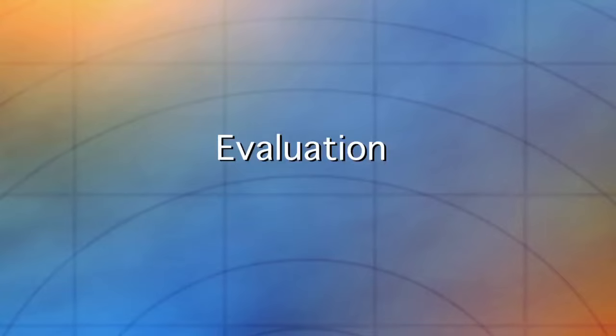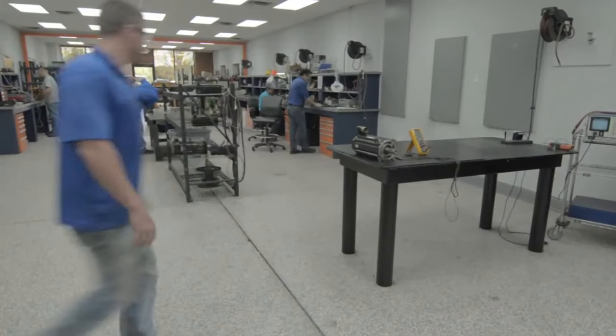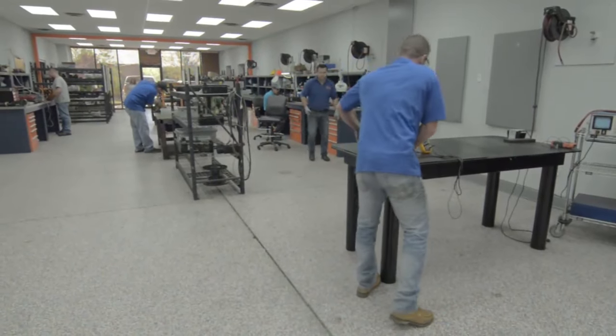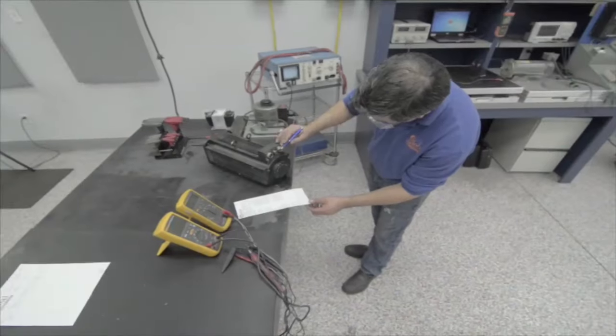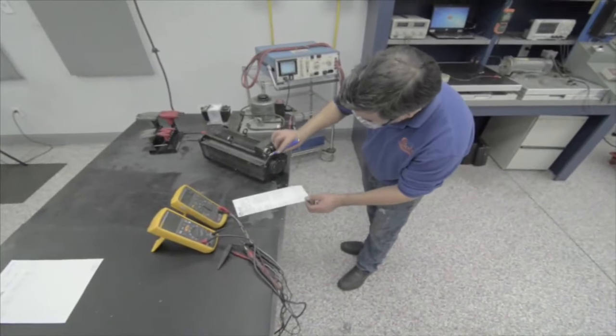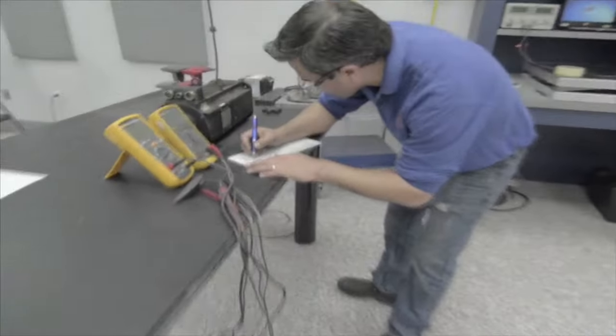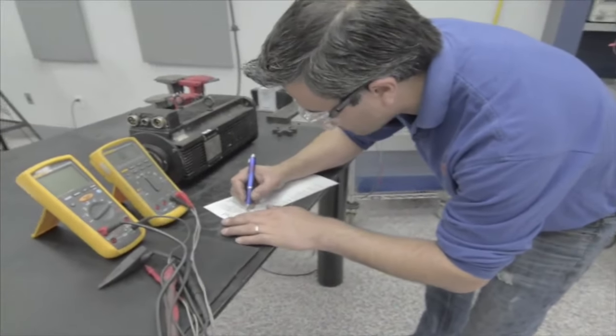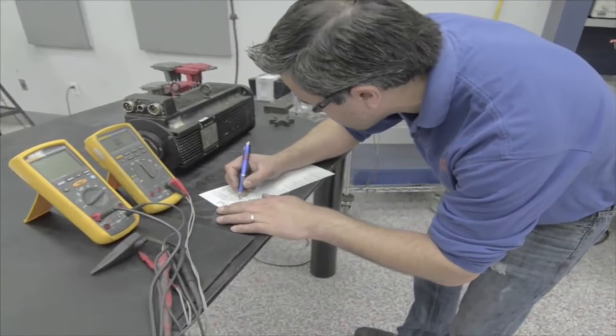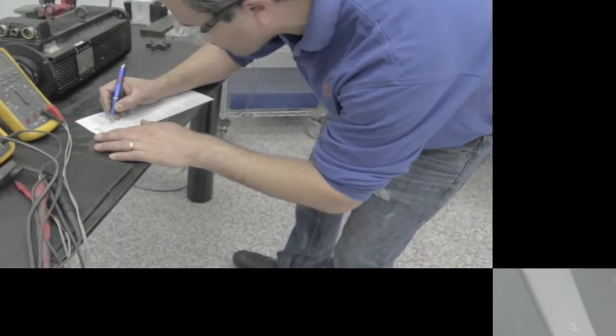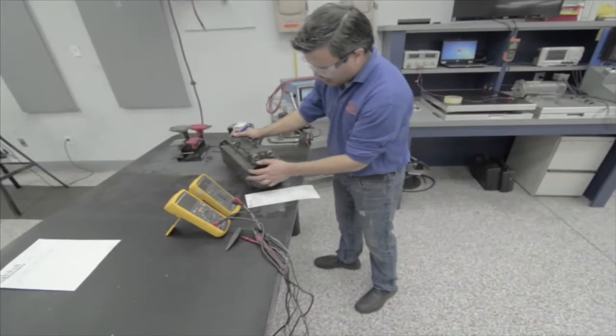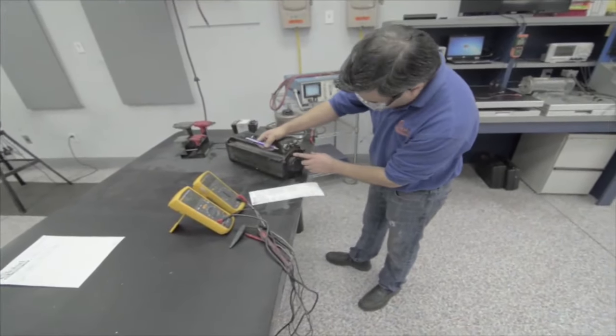Once your servo motor arrives and has been received into our database, an evaluation by one of our motor technicians is performed before the servo motor repair is quoted. Here, the technician is performing a visual inspection, first verifying the model number, serial number and GES number, our internal unique barcode number given by our system at the time it is received.